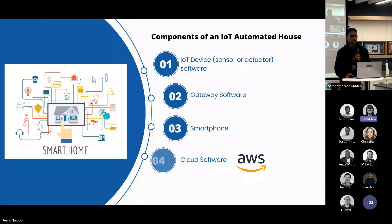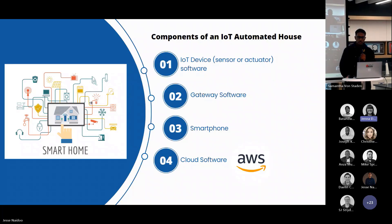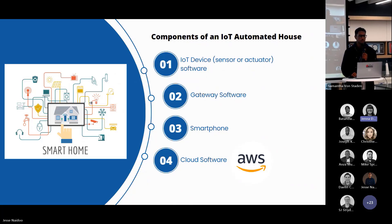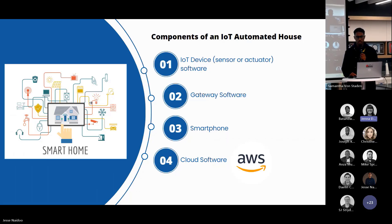There are four components of an IoT automated house. We'll go through these one by one. The first component is an IoT device, which can be a sensor or actuator. Sensors can be cameras, motion detectors, and light sensors. Actuators can be switches, locks, or any device that performs a physical action.